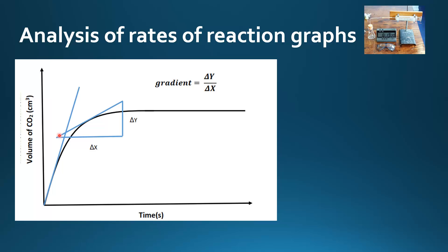For example, I've drawn this line here as the tangent to the curve for a particular time, and I can measure the change in y over the change in x. That will give me the gradient of the line, which is the rate of reaction at a particular time.